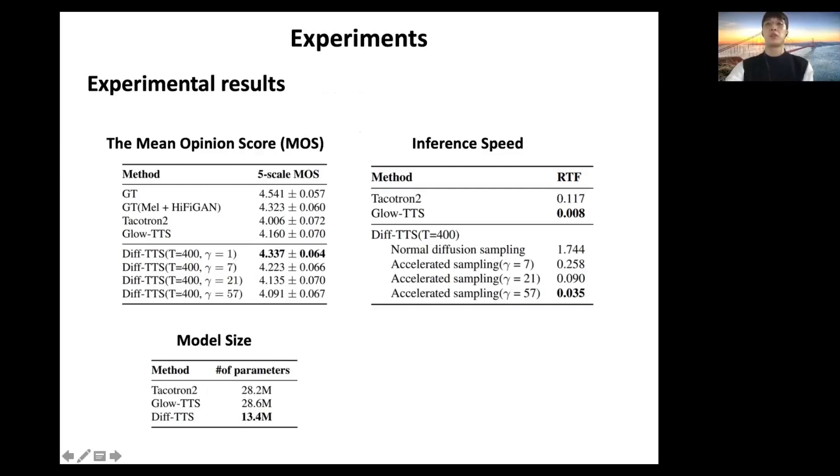Although Diff-TTS with gamma equals 57 is slower than Glow-TTS, Diff-TTS is fast enough to build a real-time TTS system since it is 28 times faster than real-time.